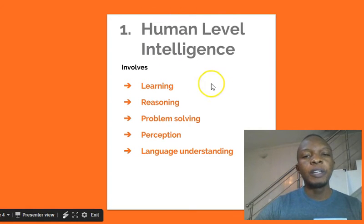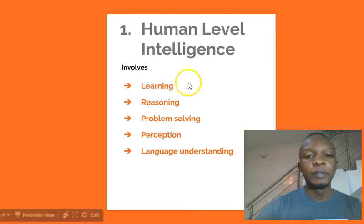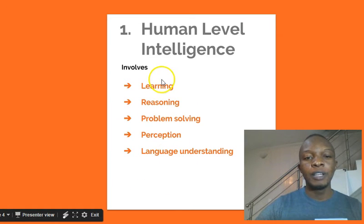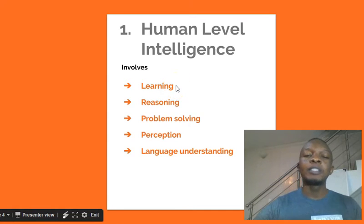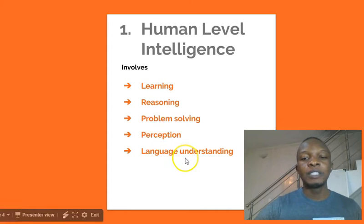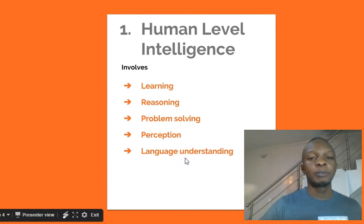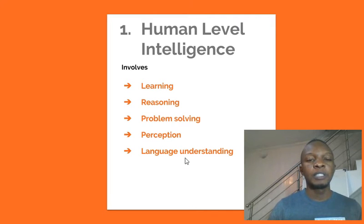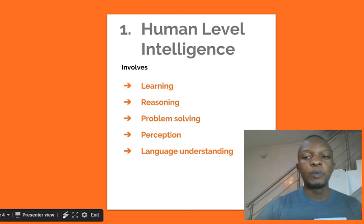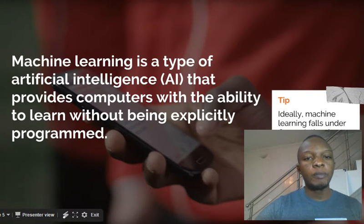What does human-level intelligence entail? Some scientists have come to the general understanding that human-level intelligence involves five things: first, the ability to learn from situations and experiences; second, reasoning; third, problem solving; fourth, perception; and fifth, language understanding — which involves speech and sign language as means of communication.